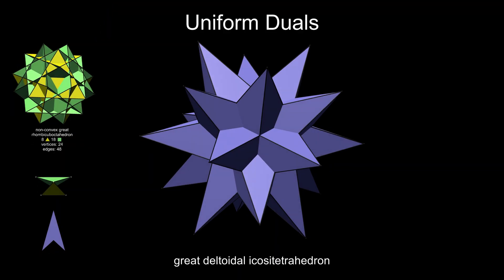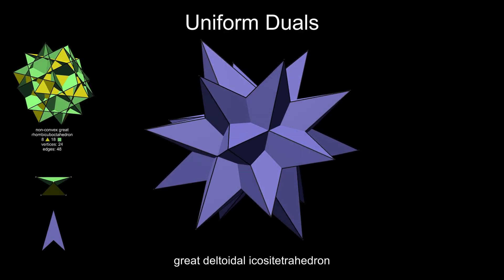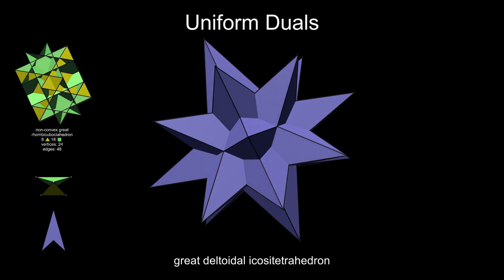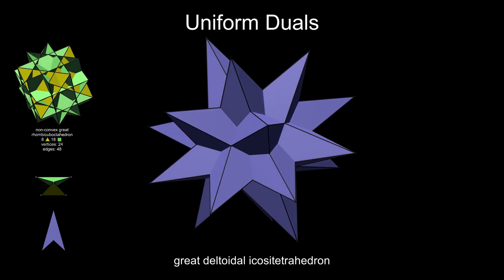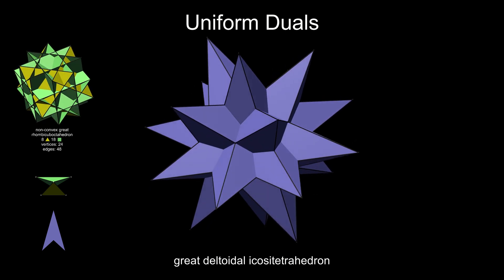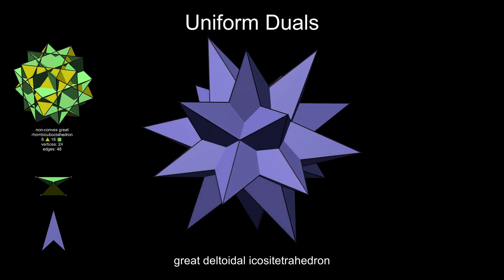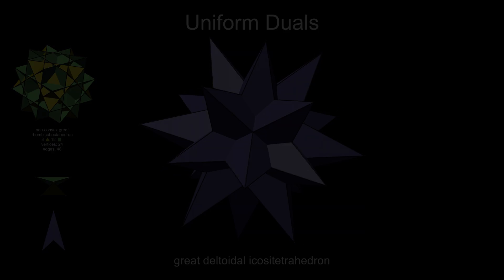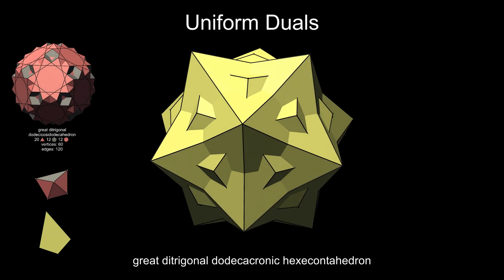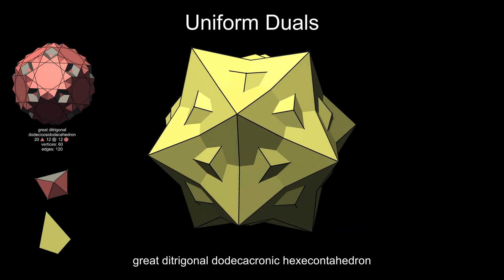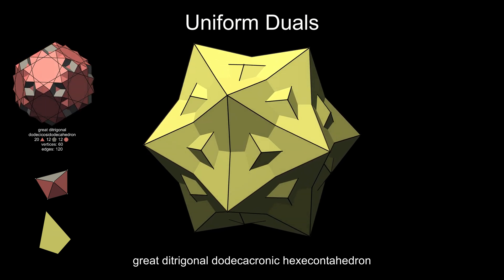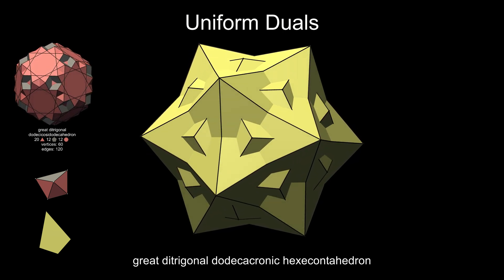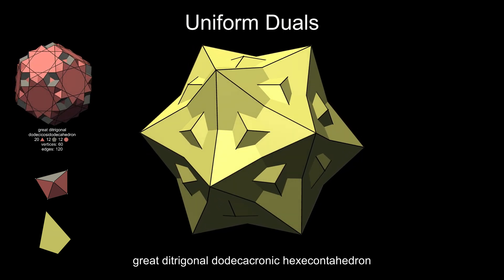The great deltoidal icositetrahedron has dart-shaped faces that pass through the body of the figure and out the other side, so that all vertices are visible. The great ditrigonal dodecacronic hexacontahedron has a somewhat comical appearance, like a crumpled icosahedron.